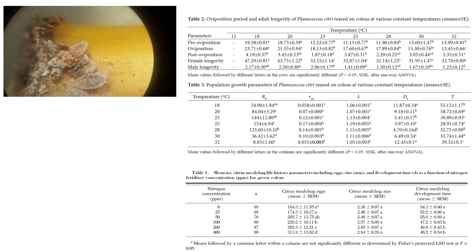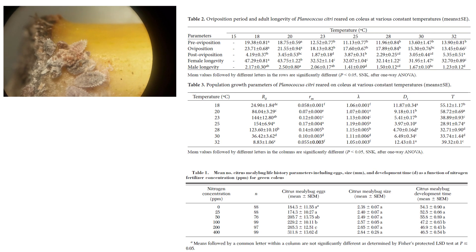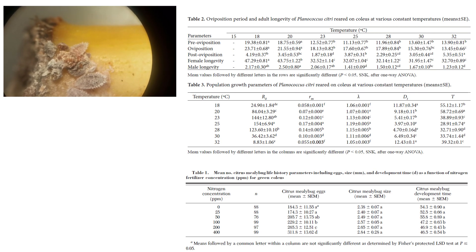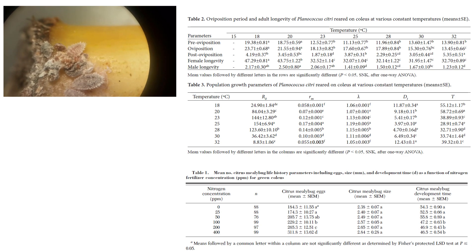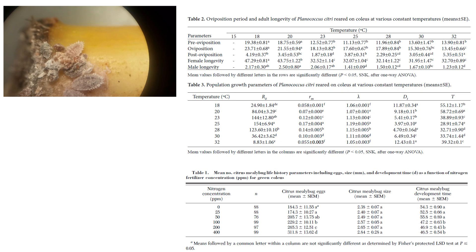The net reproductive rate in a report on citrus mealybug development on coleus was highest at 25 degrees Celsius, with 154 eggs per female per generation, and lowest at 32 degrees Celsius, with 8.83 eggs per female per generation. The intrinsic rate of natural increase of citrus mealybug increased with temperature to reach a maximum at 25 degrees Celsius, and then declined at 28 to 32 degrees Celsius.